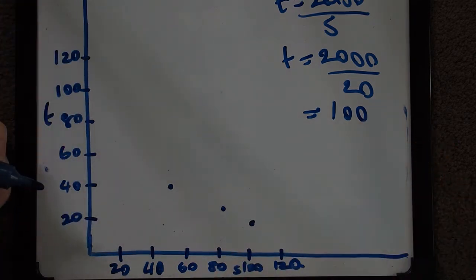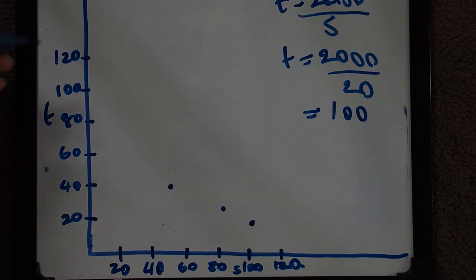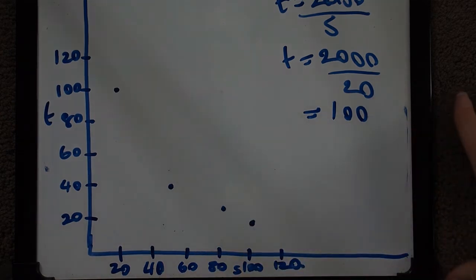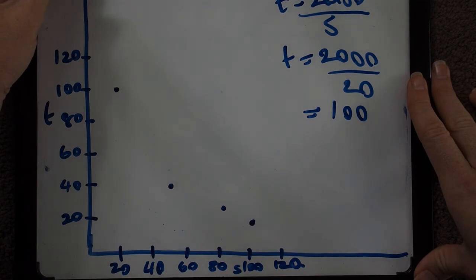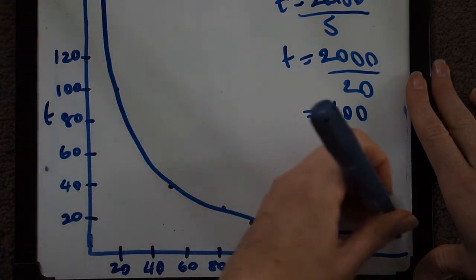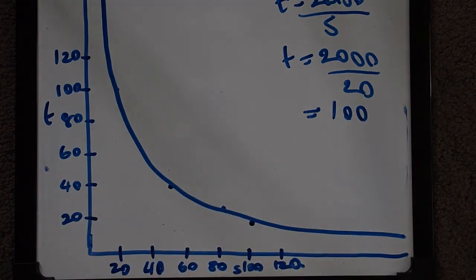When I have an s value of 20 I have a t value of 100, so remember this is in hours, a t value of 100 hours. Then we join our points, remember with a smooth curve there is some estimation involved. We know it's going to take that form because it is a reciprocal function, it's a model of a reciprocal function.